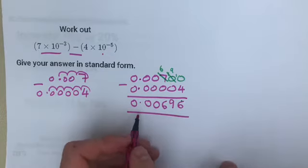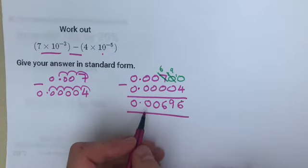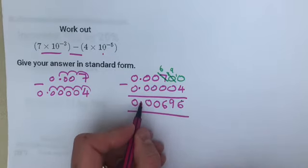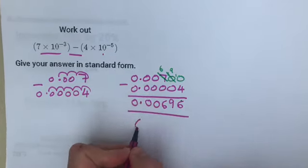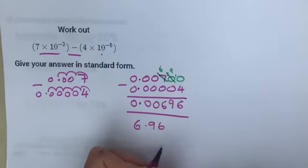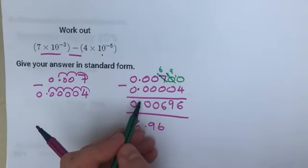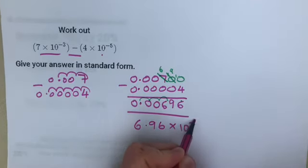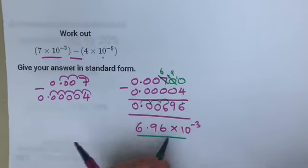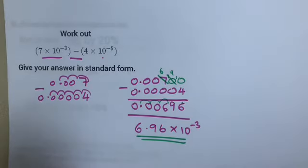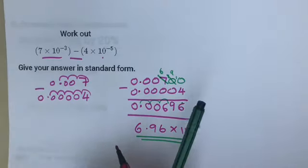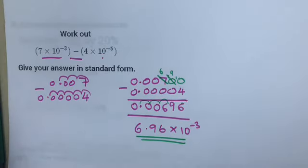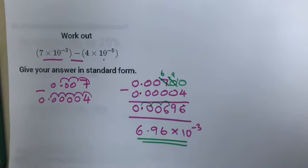First part done - one mark. Second mark is to change to standard form. Number between 1 and 10: where do you put the decimal point? We've gone 1, 2, 3 places, so times 10 to the minus 3. That's done. If you don't get it first time, watch the clip again - these are probably the hardest ones. Your turn to have a go - don't click 55, thank you.